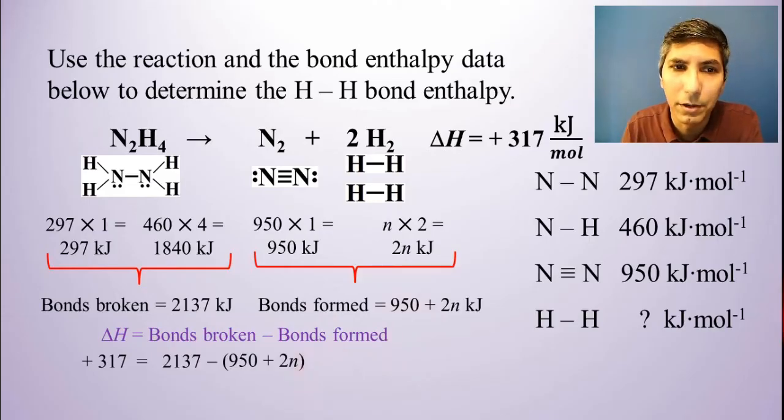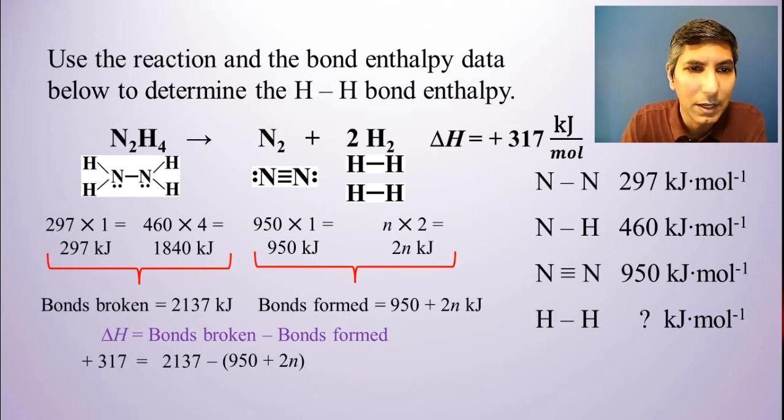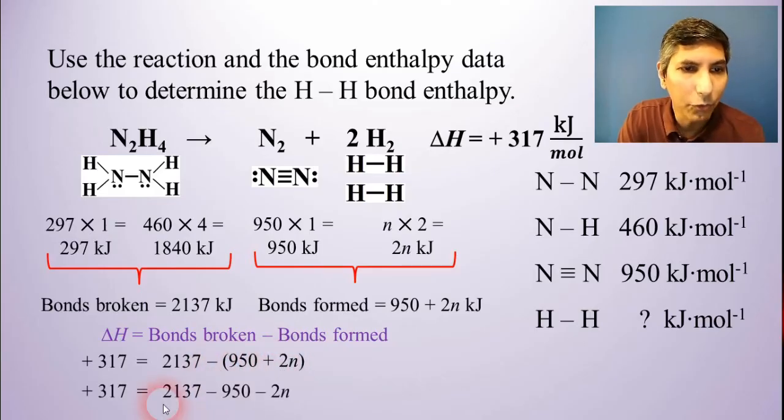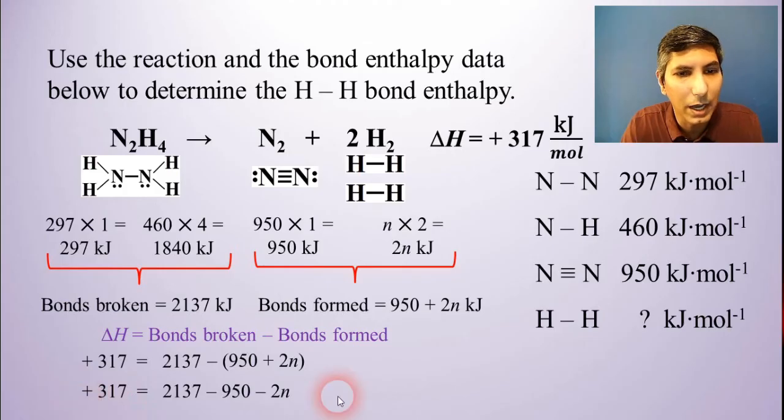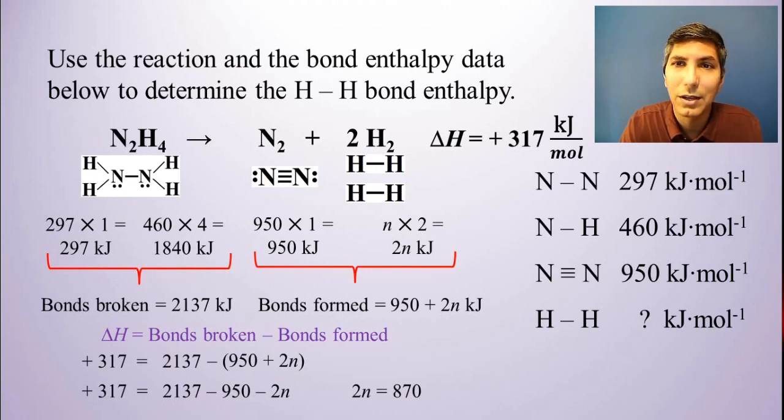Now, be very careful when you solve here. Remember to be careful with those signs. You don't want to mess the signs up and get the wrong answer. So when I distribute this negative sign across everything inside the parentheses, I get 317 equals 2137 minus 950 minus 2N. And so when I do the subtraction and bring this over to the other side, I get that 2N equals 870. So I divide both sides by 2.